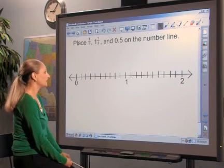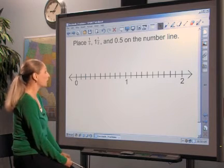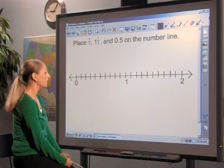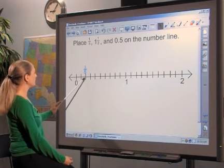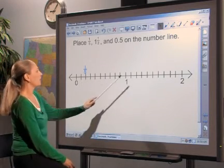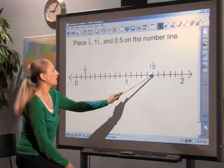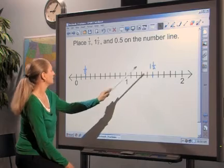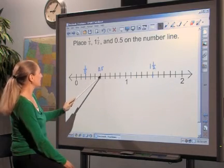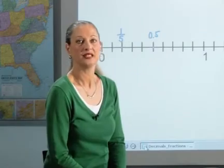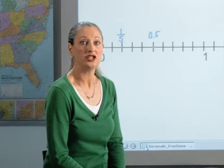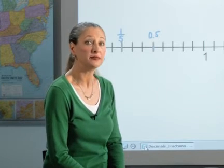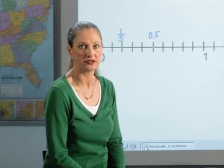Then have students place several benchmark rational numbers on the line, such as one-fifth, one-and-one-half, and five-tenths. Have students explain and justify their reasoning as they place the numbers.